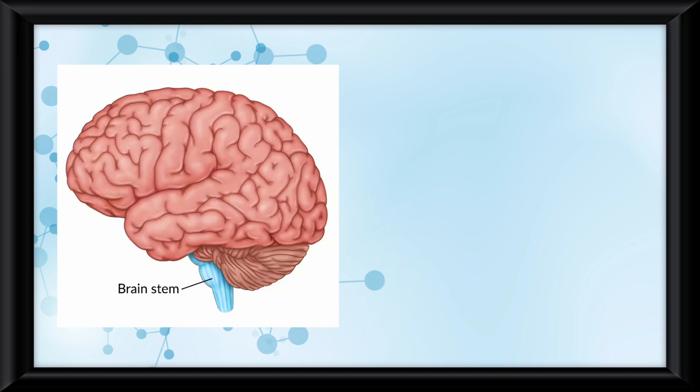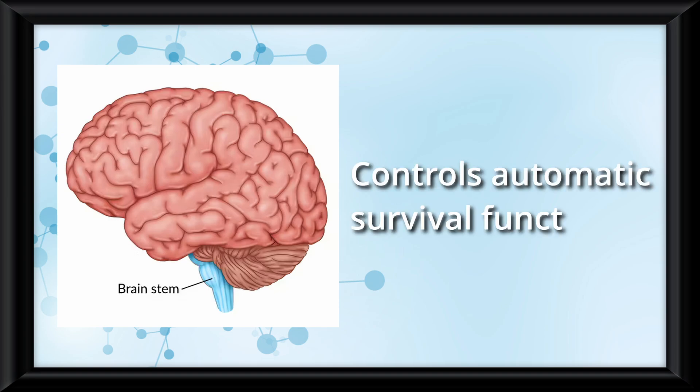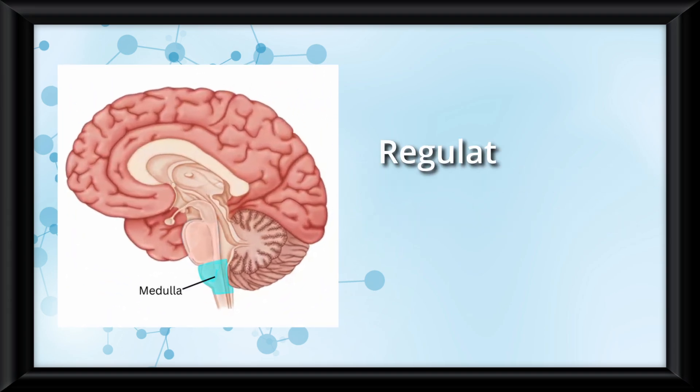We'll start with the brain stem, the most basic structure. It controls automatic survival functions. Within it, the medulla regulates breathing and heart rate.